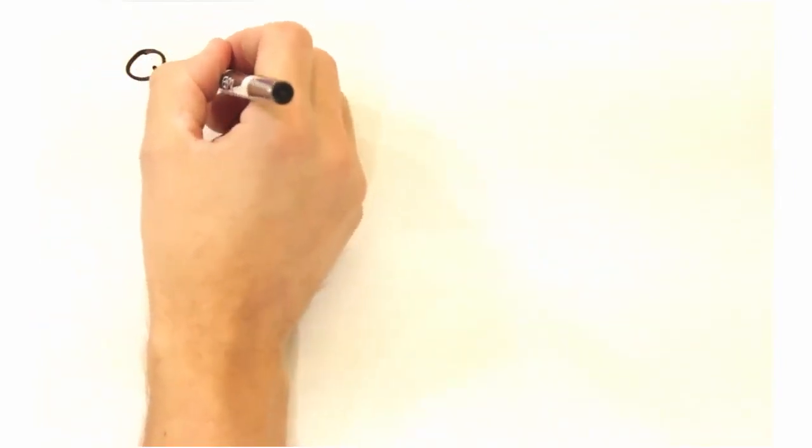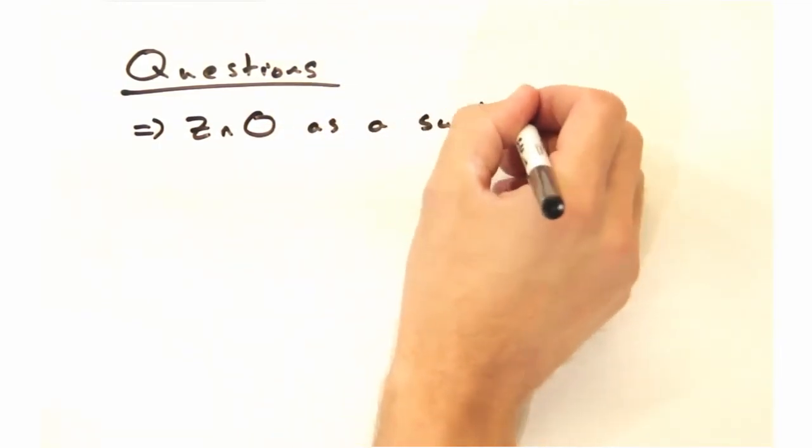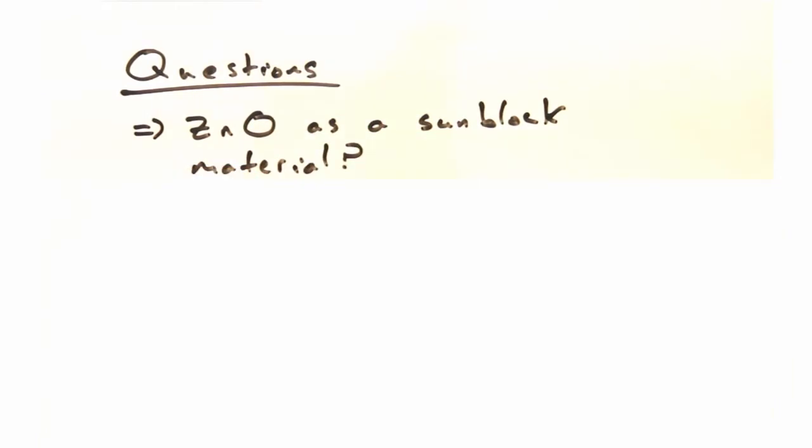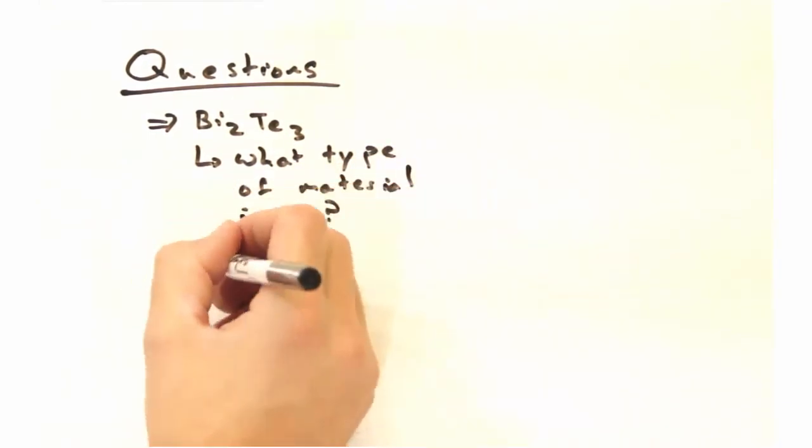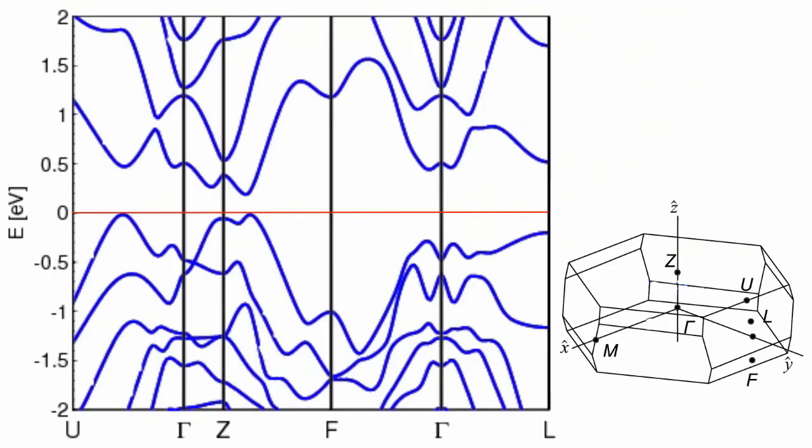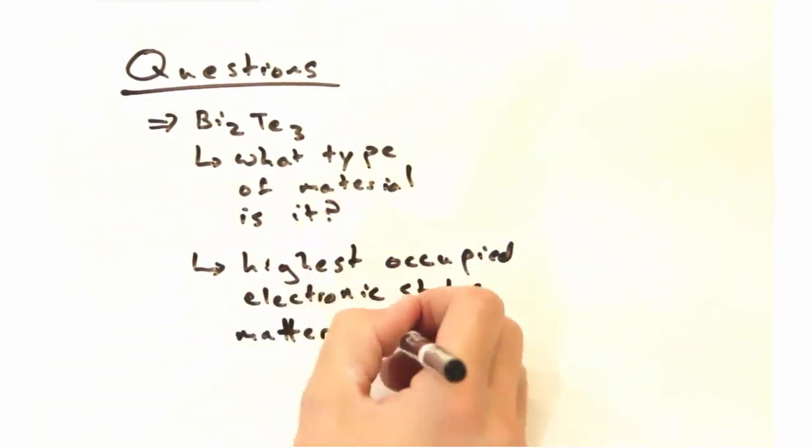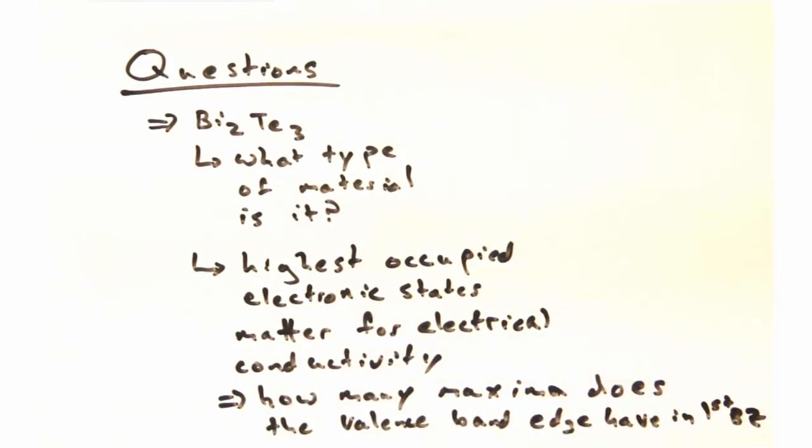Okay. So how about some questions to ponder? Let's start with zinc oxide as a sunblock material. Can you connect the band structure to its use in protecting us from UV light? So here's a two-part question on the band structure of bismuth telluride. First, simply, what type of material is it? And as you might imagine, the highest occupied electronic states are going to matter a lot for electrical conductivity. How many maxima does the valence band edge have in the first Brillouin zone?